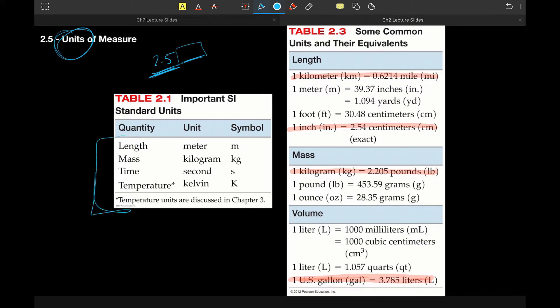So here are just some common quantities with their standard SI units, where SI is just the international standard that scientists use. So for length, we always use meters. For mass, it would be kilograms, for time would be seconds, and temperature would be Kelvin.